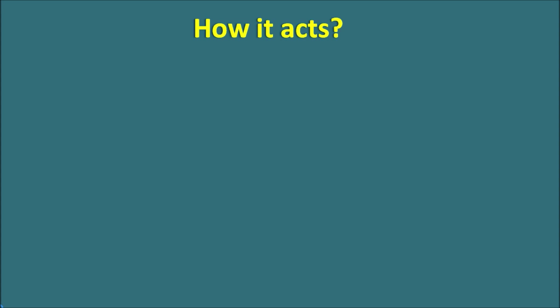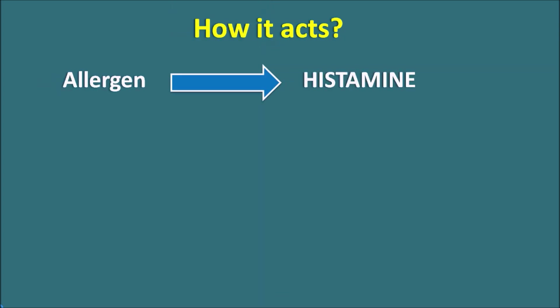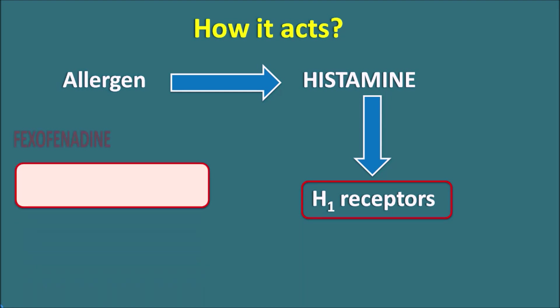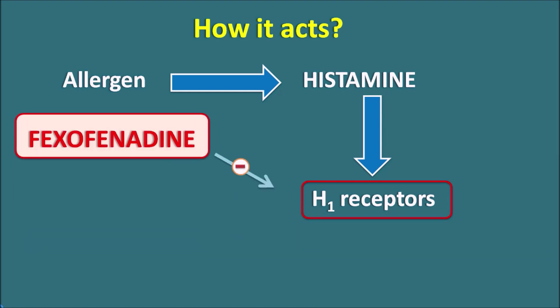How does fexofenadine act? Fexofenadine is an anti-histamine or anti-allergic drug, so it is mainly reducing the allergic response. Allergens can act as antigens so that they release histamine from mast cells, basophils, and eosinophils. This histamine can act on H1 receptors, which are responsible for the allergic response. Fexofenadine can selectively block this H1 receptor, thereby inhibiting the actions of histamine.